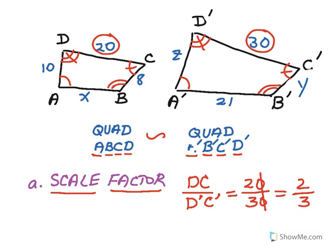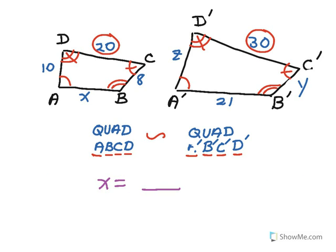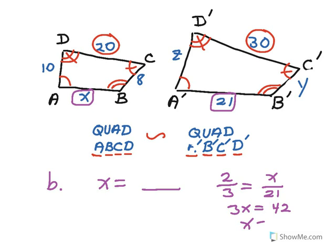Every corresponding pair of sides should be in a ratio from the small quadrilateral to the big quadrilateral of 2 to 3. Let's say in Part B, I want to find out what the value of X is. I find X on the left, and that's side AB, and I see that corresponds to the 21, side A'B' is 21 on the right. So, to find the value of X, I use the scale factor. I can say from left to right, 2 to 3 should be the same as the ratio of X to 21. And then I can solve for X. So, 3X equals 2 times 21, or 42. So, X is equal to 14.